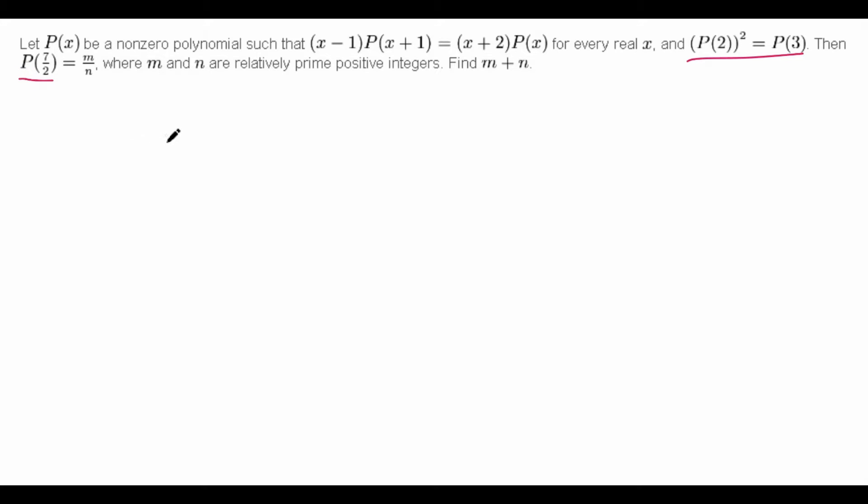So how might we go about solving this? First, do we see anything interesting about these numbers themselves, like 2, 3, and 7/2? Well, 7/2 is 3.5. So it doesn't seem to have any sort of relationship with P(2) or P(3) if we look at it right now. So let's just leave that aside and take a look at the condition itself.